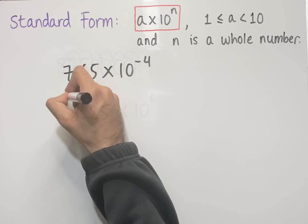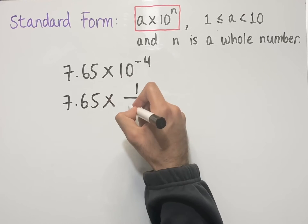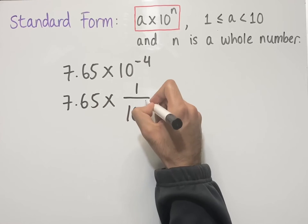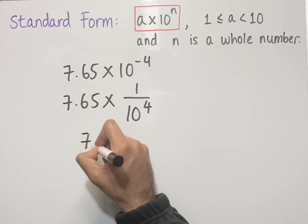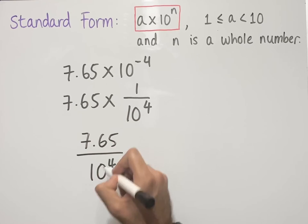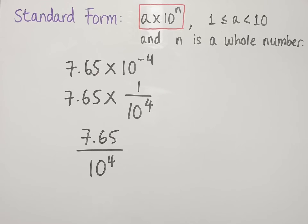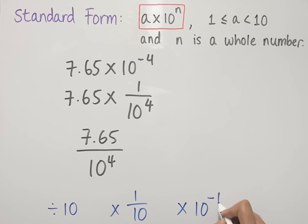We can write this as 7.65 times 1 over 10 to the power of 4. Multiplying these two numbers together we get the single fraction 7.65 over 10 to the power of 4. Just some quick notation to be familiar with: dividing by 10 is the same as multiplying by 1 over 10, which is the same as multiplying by 10 to the power of minus 1.